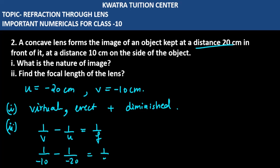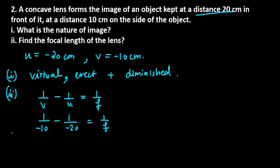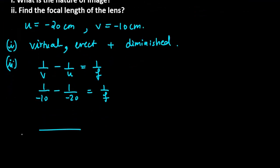Taking the LCM as 20, the first term becomes -2, and the second term becomes +1, which equals 1/f. So the value is -1/20, and by cross multiplication, f equals -20.